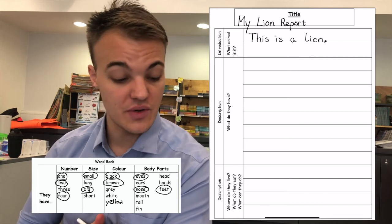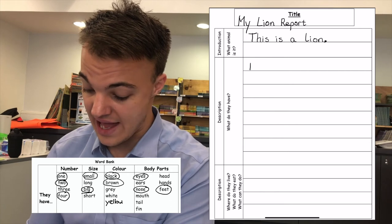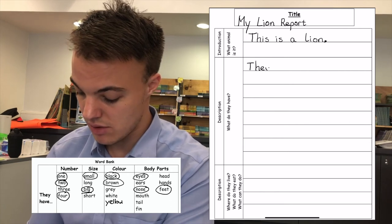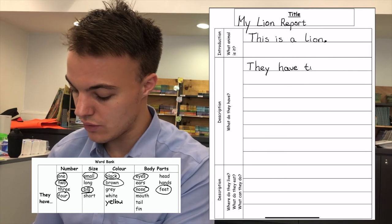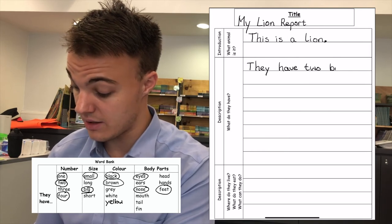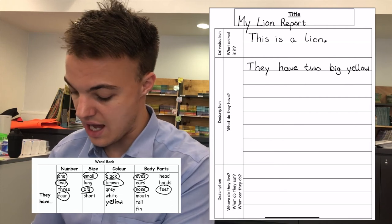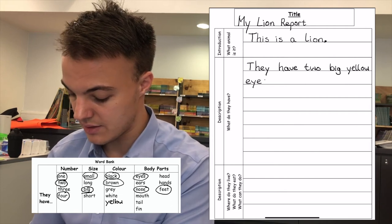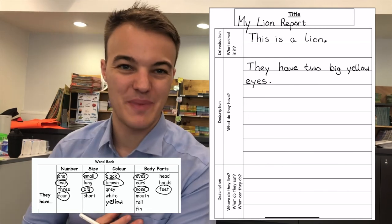Description. What do they have? Big letter T. They have two big yellow eyes. Full stop. What's next on the word bank. Can you remember?